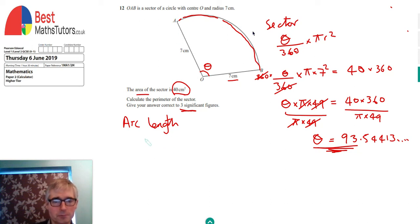The formula for arc length is theta over 360 times by 2 pi r. And 2 pi r should be familiar because that is the circumference of a circle, 2 pi times radius, or you might be familiar with it as pi times diameter.